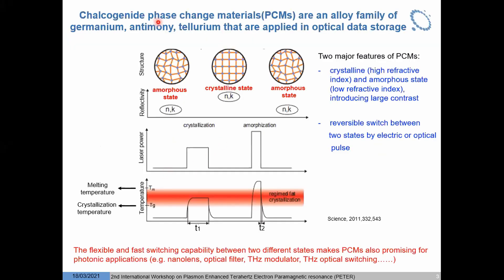Phase change materials — chalcogenide phase change materials — are normally a family of germanium, antimony, and ternary compounds that are widely applied in optical data storage. This application is mainly based on two major features. Phase change materials normally have a crystalline stage and an amorphous stage. The crystalline stage has a larger refractive index than the amorphous stage, so the different refractive index between both stages introduces a large contrast in their optical and electrical properties.